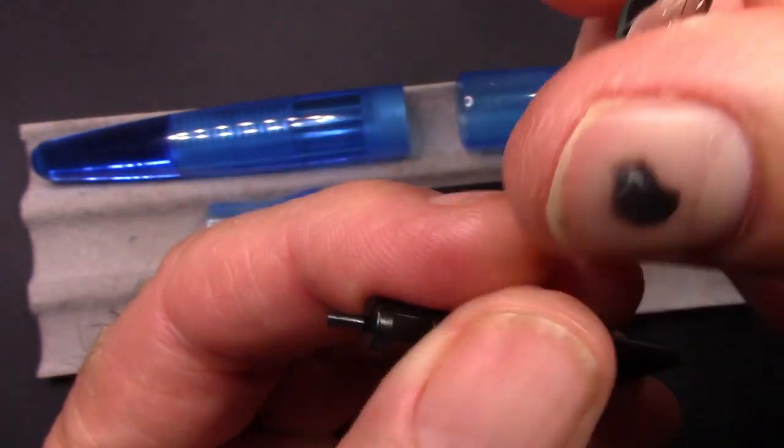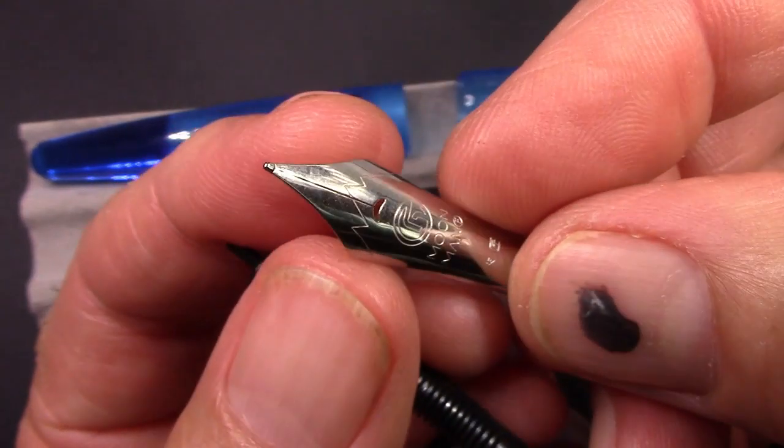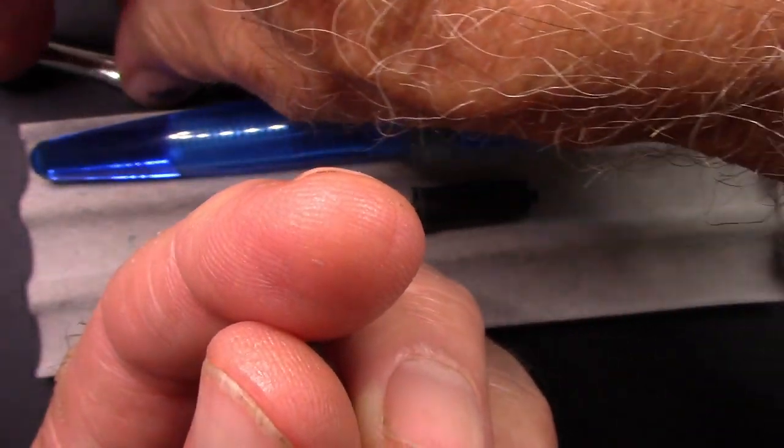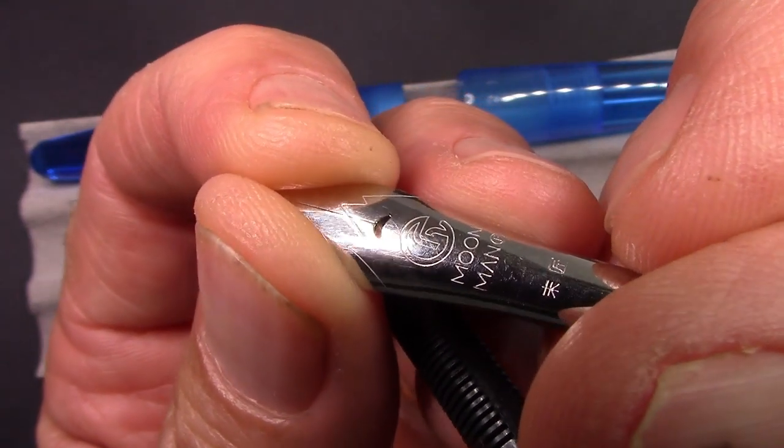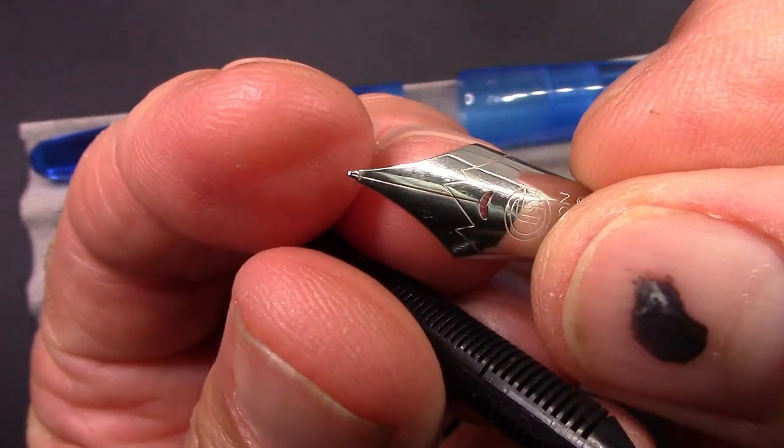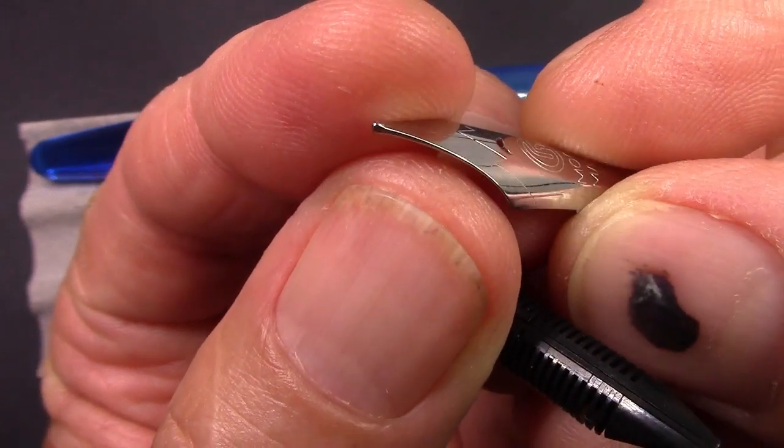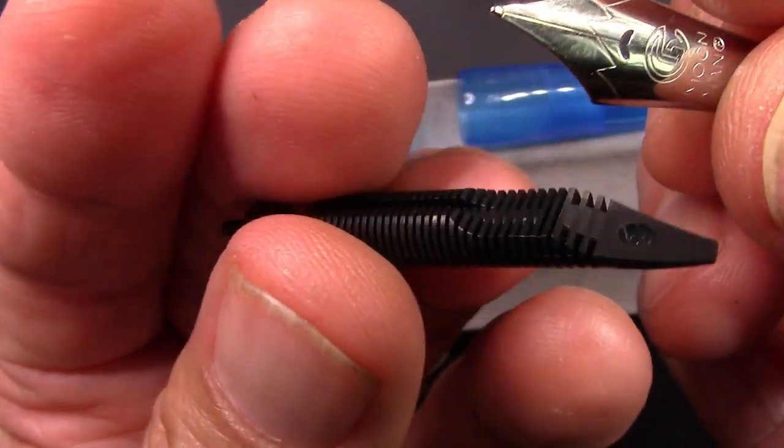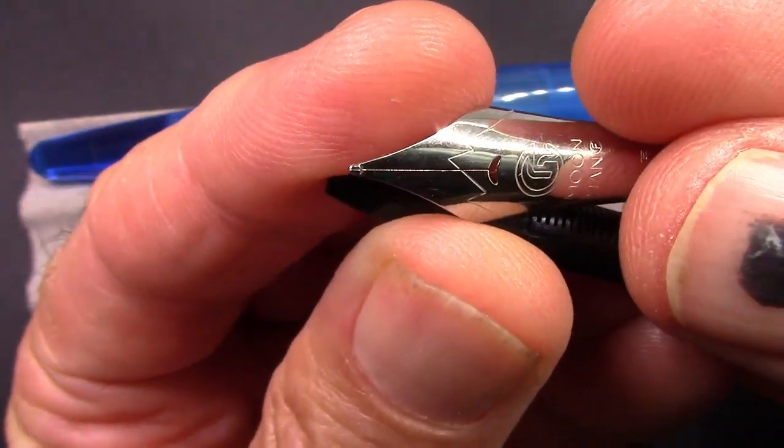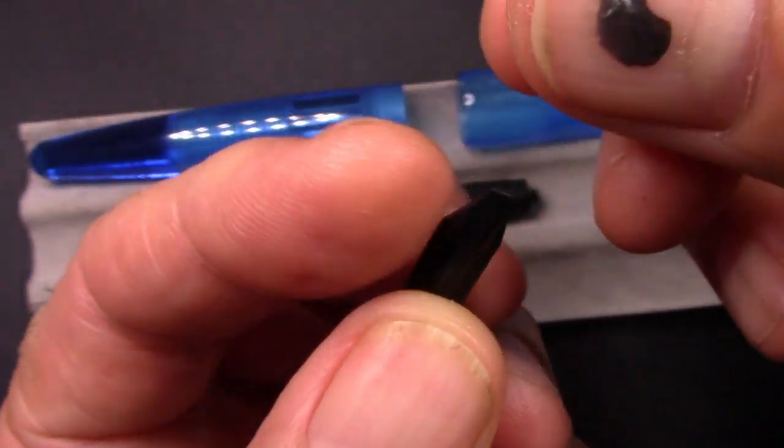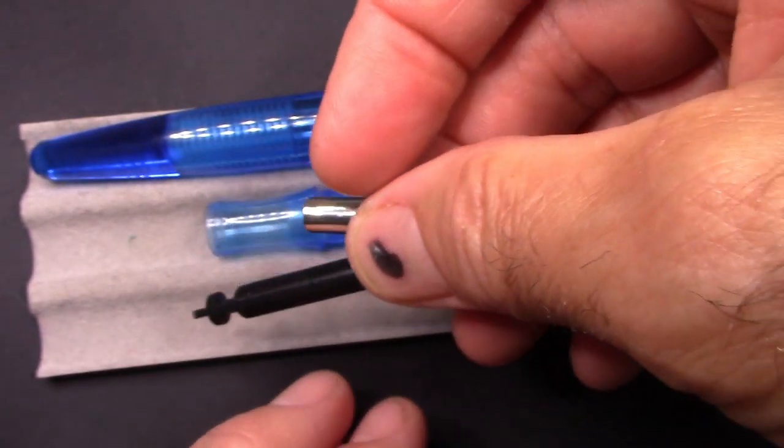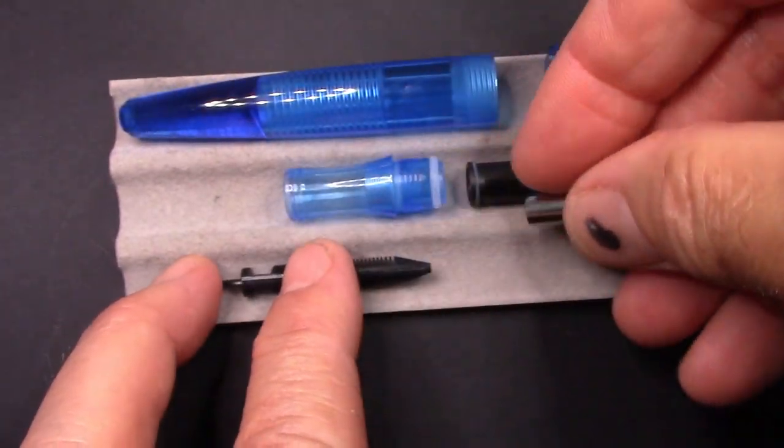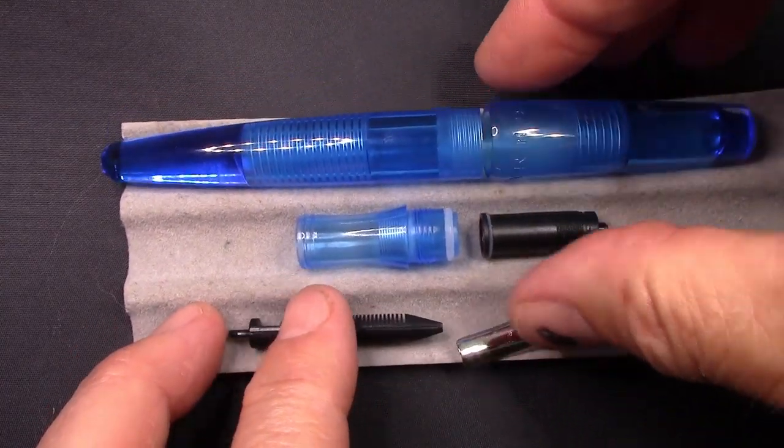And this is that, to me, excellent number six MoonMan nib. They're not really marked, but I would call them all fines. I think it'd be great if they came out with medium and broads, but we'll see.